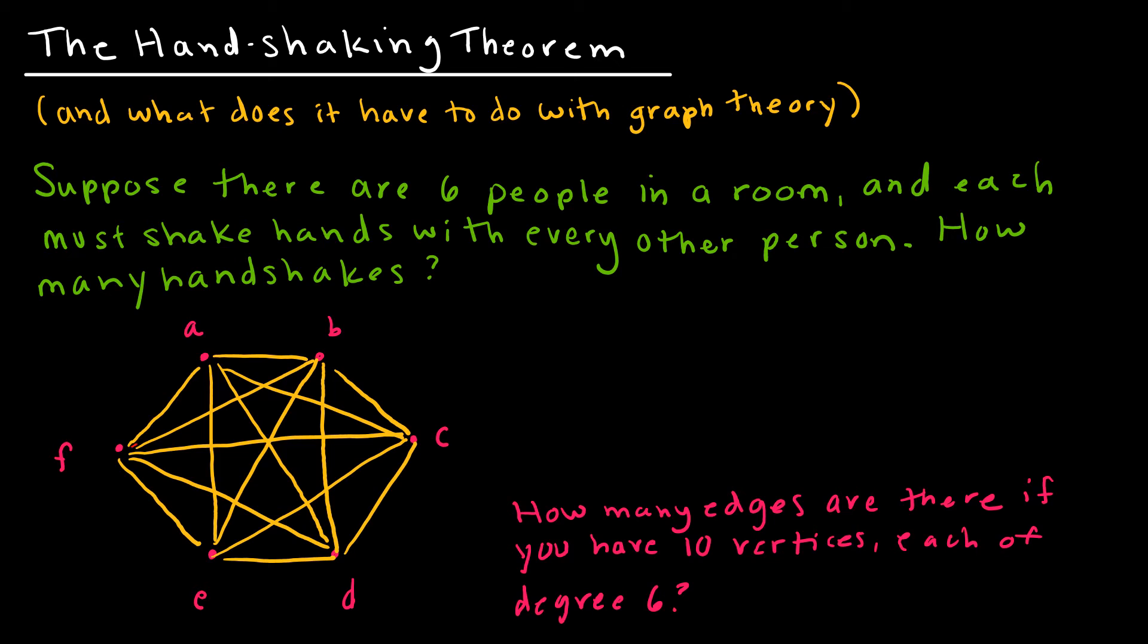I would count this as 1, 2, 3, 4, 5, and then when I start with B, I'm not going to connect it back to A because B and A have already shaken hands. So we have 5, this is 6, 7, 8, 9, this is 10, 11, 12, this is 13, 14, and this is 15. So we know the answer is 15.